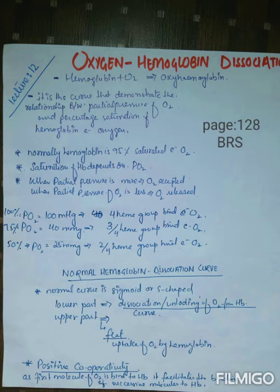In the last video we learned that hemoglobin has four heme groups that contain four irons. The heme part contains four irons and each iron has the capacity to bind with oxygen. Normally, 95% of your hemoglobin binds with oxygen, and saturation is dependent upon the partial pressure of oxygen.